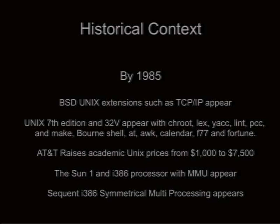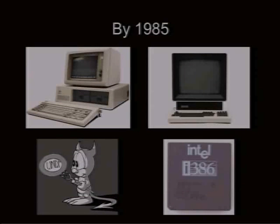A little more historical context. By 1985, BSD Unix was starting to make an impact with TCP/IP. Traditional Unix was becoming familiar with utilities we take for granted. AT&T raised the cost of academic Unix, which motivated many developers to provide alternatives. We saw the first usable Intel processor, the i386 with an MMU, the Sun 1 workstation, and Sequent in Oregon introduced i386 symmetrical multiprocessing. Essentially, this is everything we have today, only a little faster and cheaper.